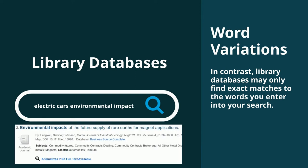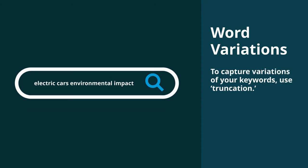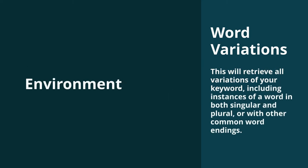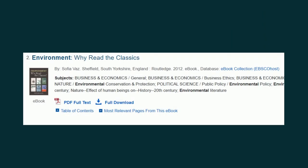Only articles containing the word environmental are found. To capture variations of your keyword, use truncation. To truncate, keep the main part of the word and replace the end with an asterisk. This will retrieve all variations of your keyword, including instances of a word in both singular and plural, or with other common word endings. Books and articles containing any variation of that word will be found for you.